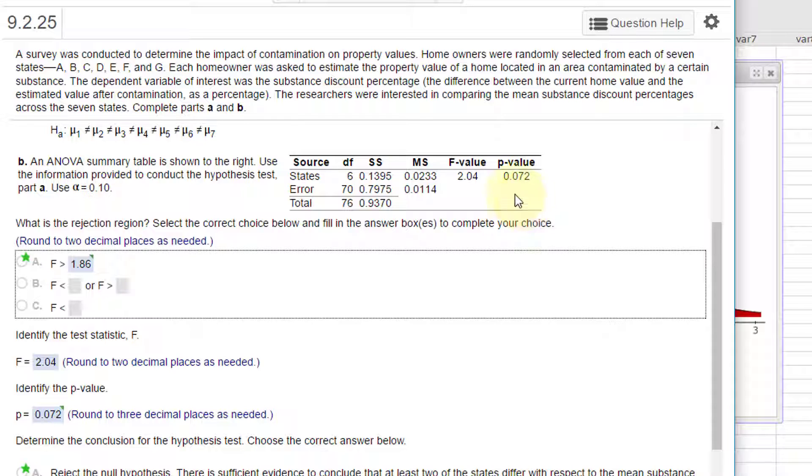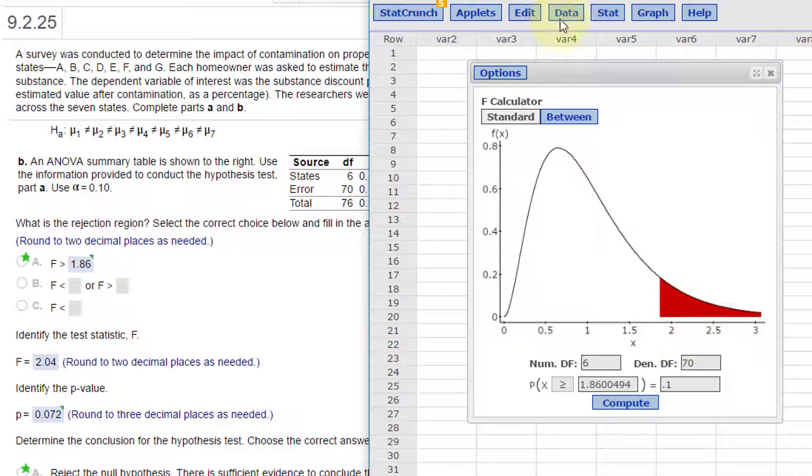Since the p-value is less than alpha, that tells us to reject the null. Also, since the F value is greater than 1.86, it's in the rejection region. 2.04 is right here, so that's in the rejection area, which also tells us to reject the null.